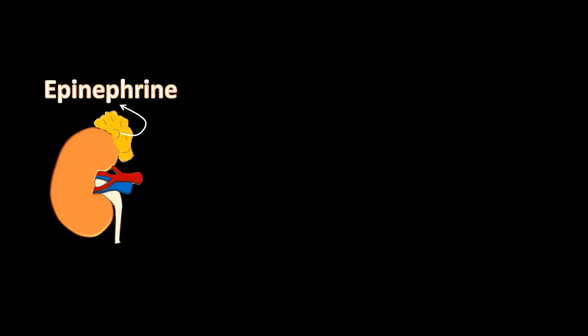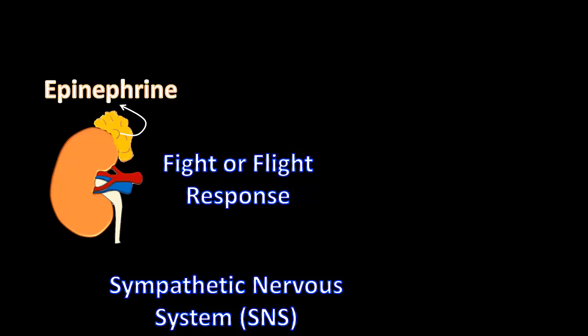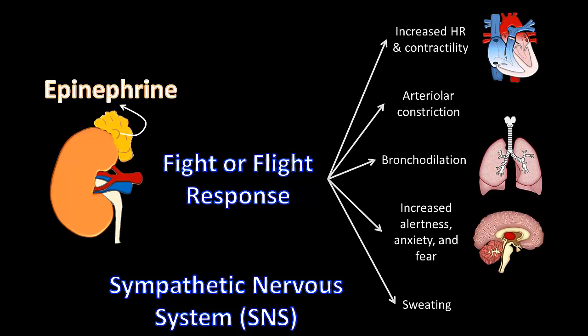Your mind quickly revisits your first-year dental physiology course and considers the effects of epinephrine on the body. Epinephrine is a catecholamine produced in the adrenal medulla that is responsible for the fight-or-flight response. The sympathetic nervous system is often referred to as the fight-or-flight system, initiated during times of mental or physical stress to mobilize the body's resources. Epinephrine has many effects within the body, including an increased heart rate and contractility, arteriolar constriction in the renal, splanchnic, or cutaneous circulatory beds, bronchodilation, and increased alertness, anxiety, fear, and sweating.